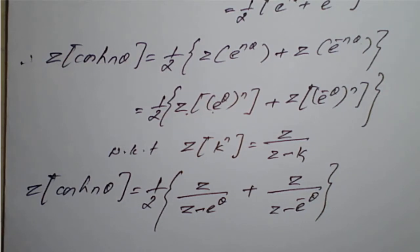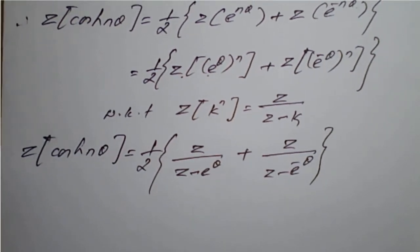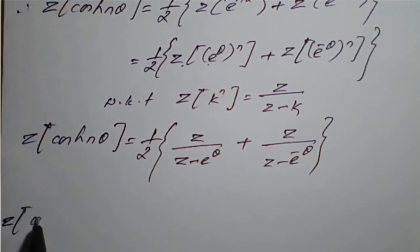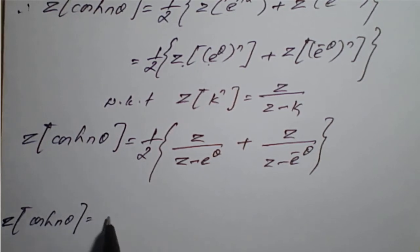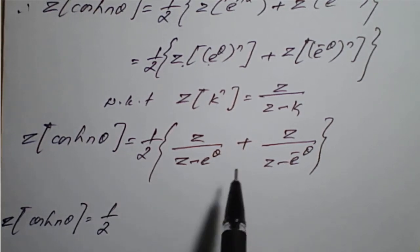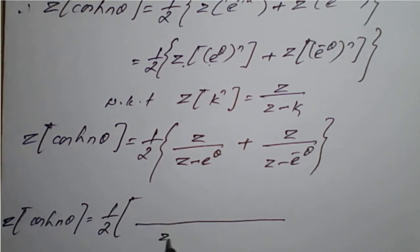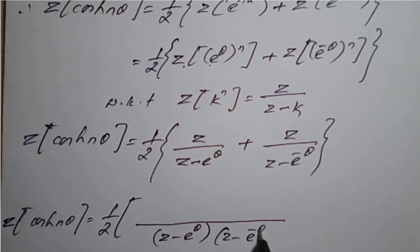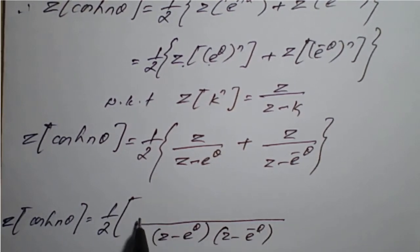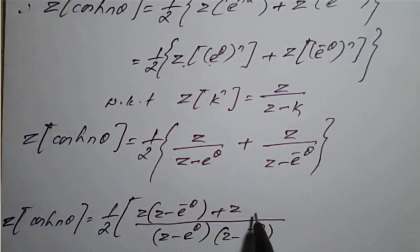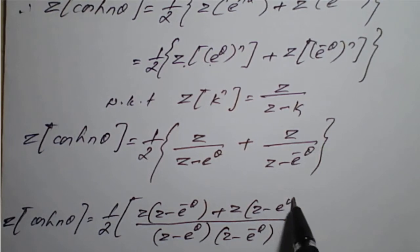We can simplify this further. Taking the LCM of (z − e^θ) and (z − e^(−θ)), cross-multiplying gives us: z(z − e^(−θ)) + z(z − e^θ) in the numerator, all over (z − e^θ)(z − e^(−θ)) in the denominator.